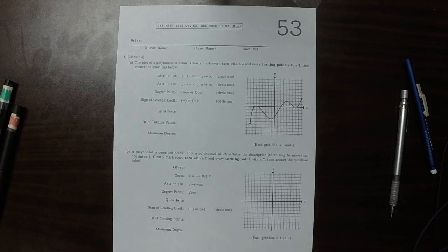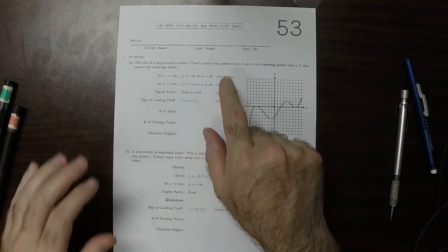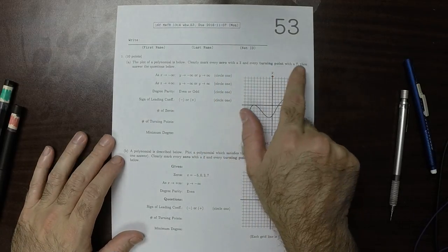This is the solution to written homework 53. Clearly mark every zero with a Z and a turning point with a T.